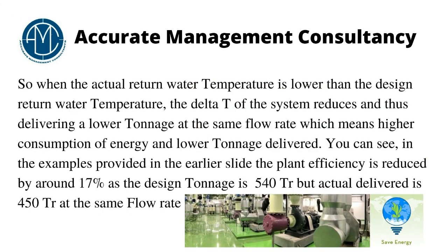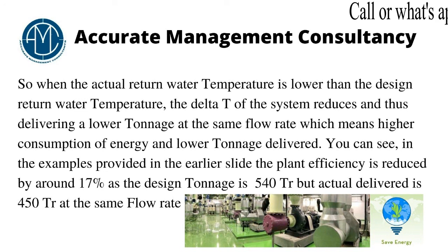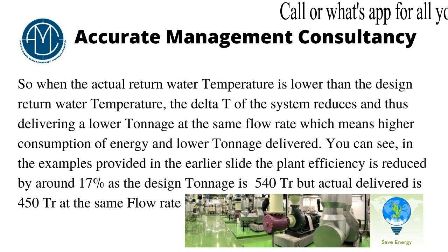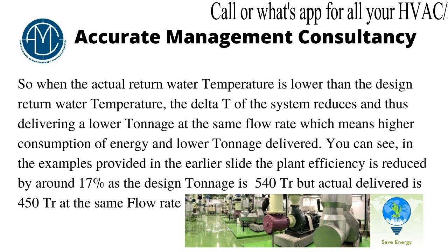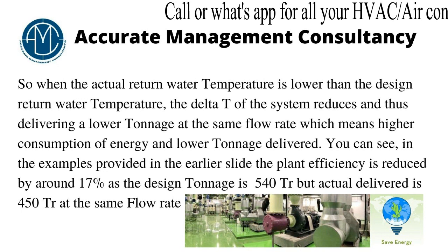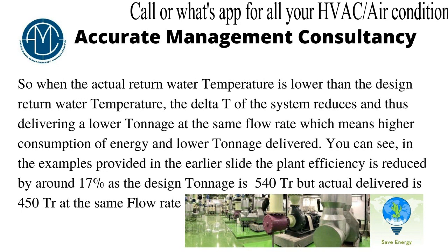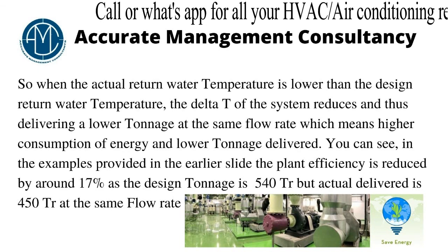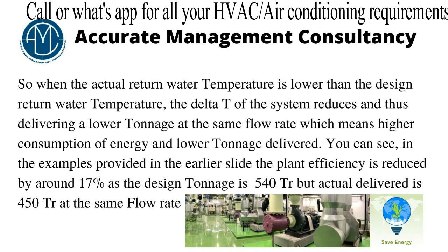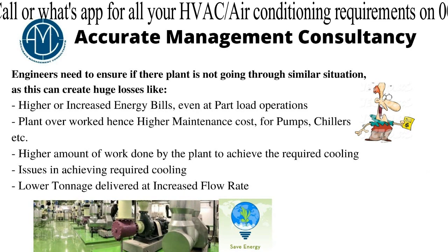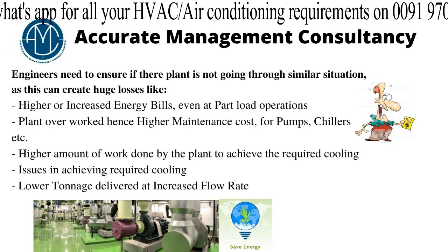When the return water temperature is higher than the design return water temperature, the Delta T of the system reduces, thus delivering a lower tonnage at the same flow rate, which means higher energy consumption and lower tonnage delivered. As shown in the earlier example, plant efficiency was reduced by 17%, as the design tonnage was 540 TR but the actual delivered tonnage was only 450 TR in the practical situation. Engineers need to ensure their plant is not going through a similar situation, as this can create huge losses.